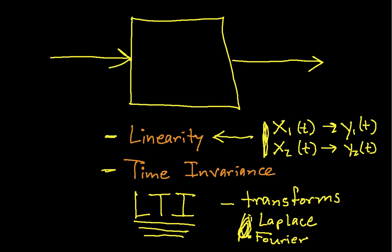Time invariance means that the system doesn't change through time. So, if I run a signal through a system today and run the same signal through the same system tomorrow, I'll get the same result tomorrow as I did today.